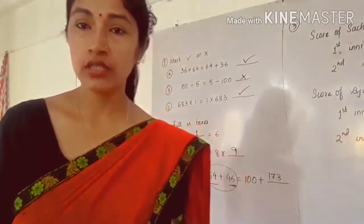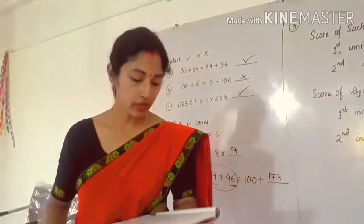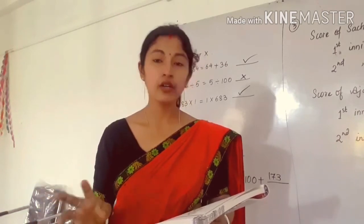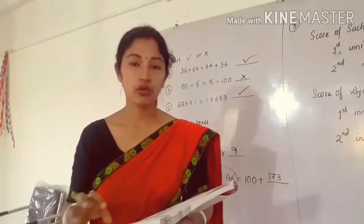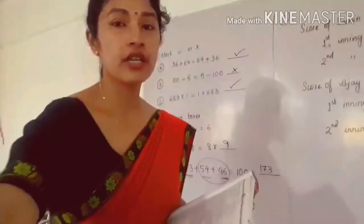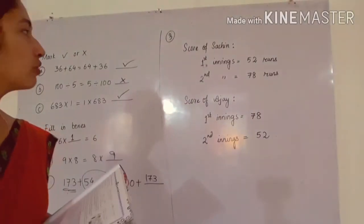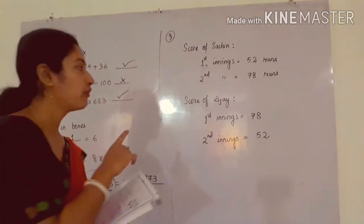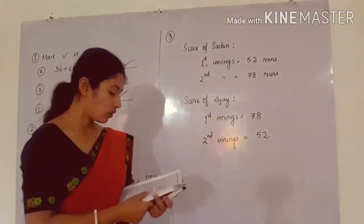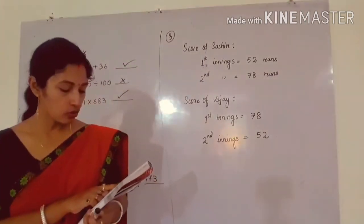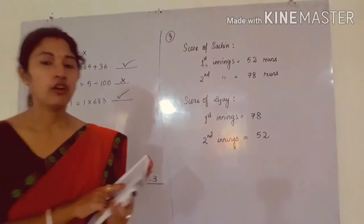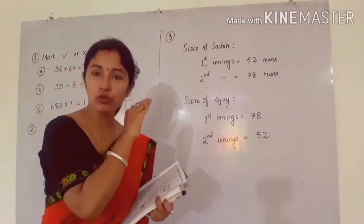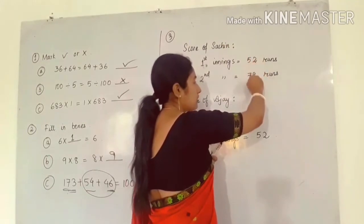Come to question number 3. From the book, there is a word problem: Sachin scores 52 runs in the first inning and 78 in the second inning. There are two persons — one is Sachin and second is Ajay. The scores are given. The score of Sachin in the first and second inning is given. First inning it is 52 runs, second inning it is 78 runs. Similarly, the score of Ajay is also written for first inning and second inning. They are asking who has the higher total score.